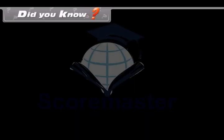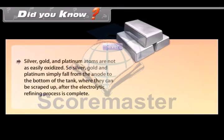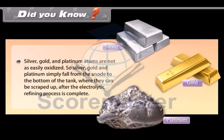Did you know? Silver, gold and platinum atoms are not easily oxidized. So silver, gold and platinum simply fall from the anode to the bottom of the tank where they can be scrapped up after the electrolytic refining process is complete.